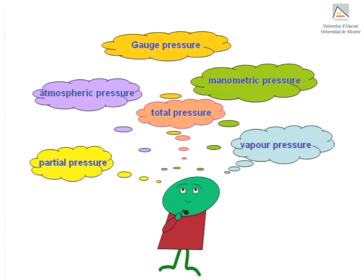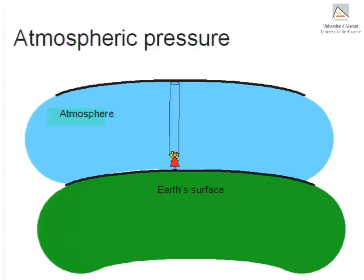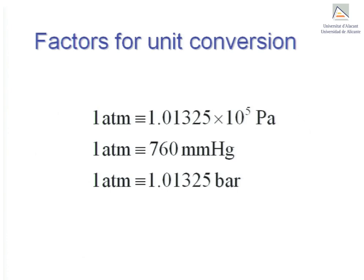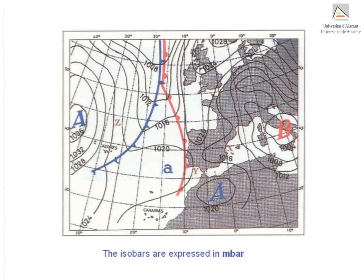Let's begin with the simplest type of pressure: atmospheric pressure. Atmospheric pressure is the force per unit area exerted by the weight of a column of air above a measuring point. Here the column of air is shown above a person. Atmospheric pressure is around one atmosphere at sea level, but its value fluctuates. Pressure can be expressed in various units, and unit conversion factors can be found in most academic texts. It is the pressure reported in weather forecasts — this map shows isobars expressed in millibars. In chemical engineering calculations, one atmosphere is usually taken as the value of atmospheric pressure.